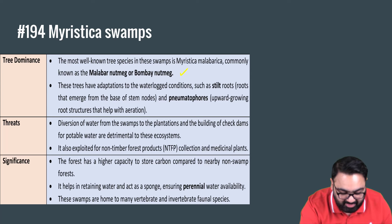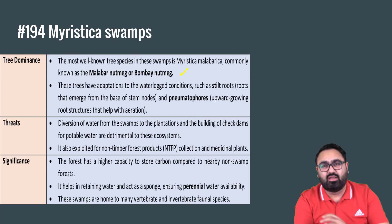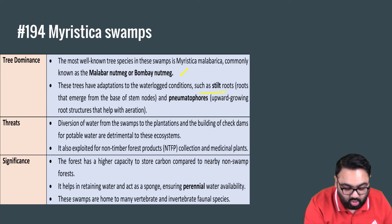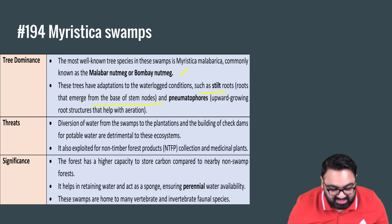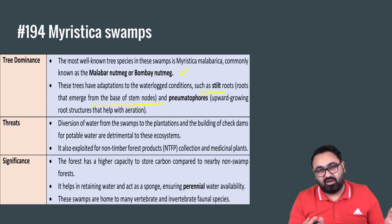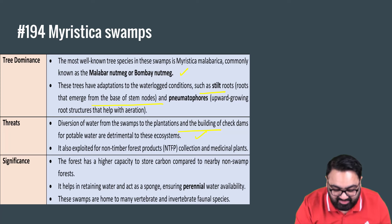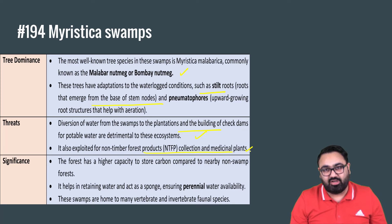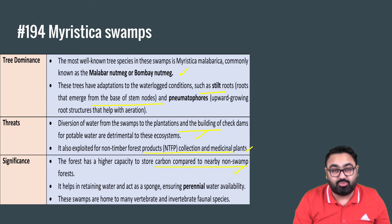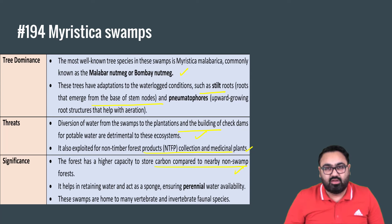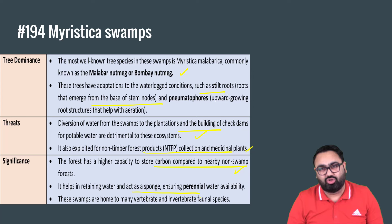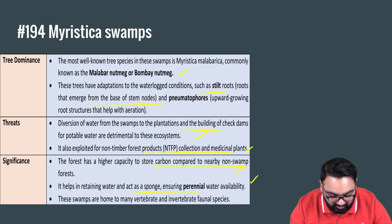These swamps mainly have trees from the nutmeg family. These trees are interesting because they have adapted over centuries to waterlogged conditions — they have stilt roots, which emerge from the base of the stem nodes. When water is diverted from these swamps to other plantations, this becomes detrimental for them. They are also exploited for non-timber forest products collection and for medicinal plants. Importantly, they have a high capacity to store carbon and also retain water, acting as a sponge — so when required, they can also serve as a source of water, with perennial water availability.